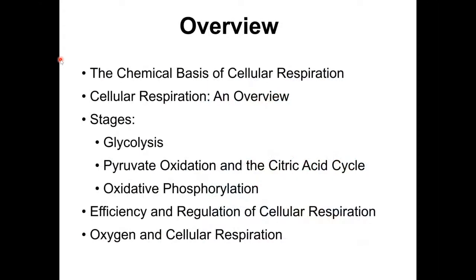Here's a brief overview of what we'll cover. First, some chemical background facts of cellular respiration. Then a quick overview of cellular respiration itself and all the different steps: glycolysis, pyruvate oxidation, the Krebs cycle or citric acid cycle, and then oxidative phosphorylation. After that, we'll figure out how efficient cellular respiration is in percentage — how much of the potential energy in glucose is actually retrieved. Finally, we'll talk about how cellular respiration is done in the absence of oxygen and in different types of organisms.